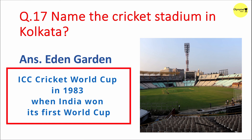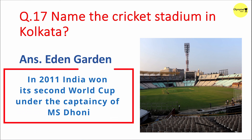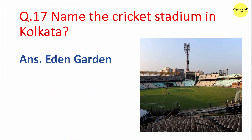Eden Gardens stadium has witnessed several historic matches, including the final of the ICC Cricket World Cup in 1983 when India won its first World Cup by defeating the West Indies. India has won a total of two ICC Cricket World Cups so far. In 2011, India won its second Cricket World Cup under the captaincy of M.S. Dhoni, defeating Sri Lanka in the final at Wankhede Stadium in Mumbai.